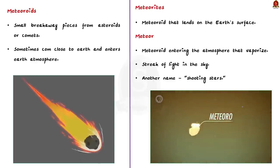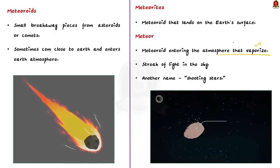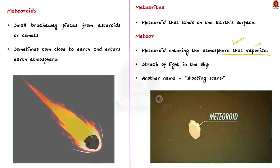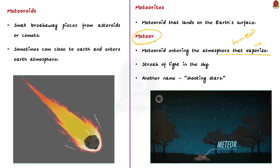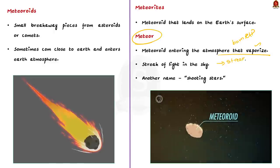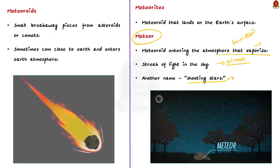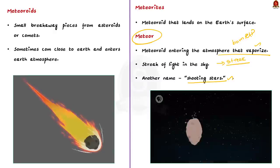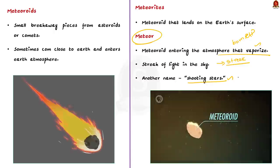After entering the atmosphere, some meteoroids will vaporize — that is, they will burn up. At that point it is no longer a meteoroid; it turns into a meteor. This vaporizing process looks like a streak of light in the sky, which is why we call them shooting stars. But from this discussion it is very clear that meteors are not actually stars, but breakaway pieces from asteroids.